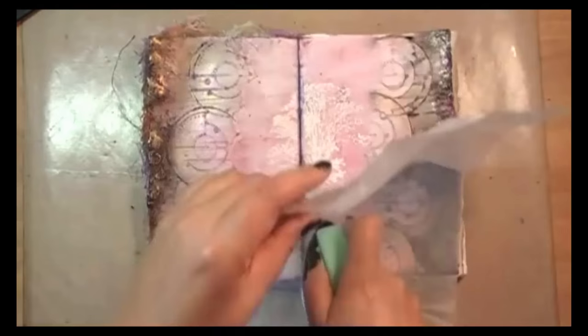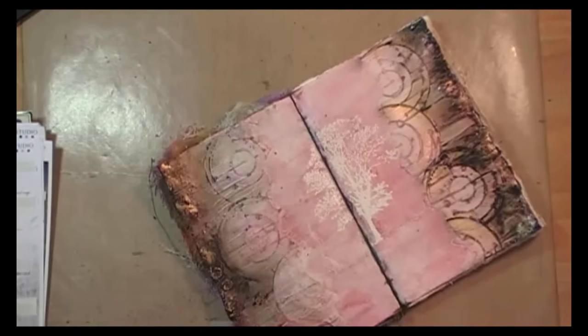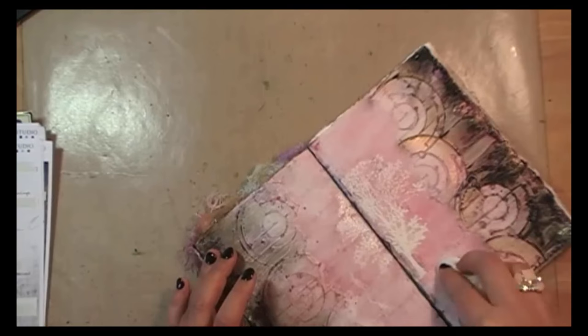I started to lift up the embossing powder using tissue paper and using a hot iron. So you remelt the powder and it sticks to the tissue paper, and that way you can lift it up. So you can see now that the edges are no longer dark and black, they are highlighted with the metallic wax.